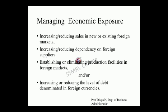Another option is establishing or eliminating production facilities in foreign markets. One way to enter international business is by placing production facilities in the foreign market, where the company can access raw materials nearby or utilize the skilled labor and human resources of that particular country. If foreign exchange rates are not suitable for the company's financial planning, they can establish or eliminate production facilities in foreign markets.